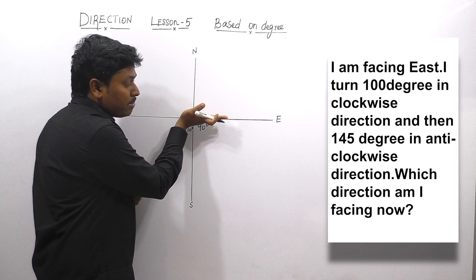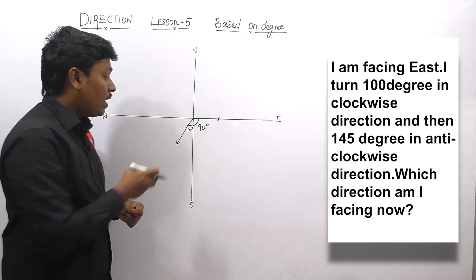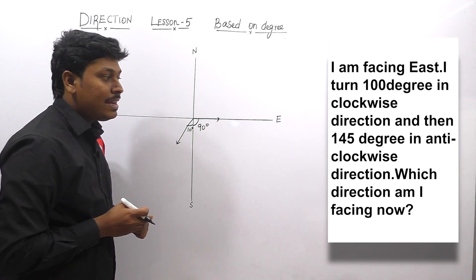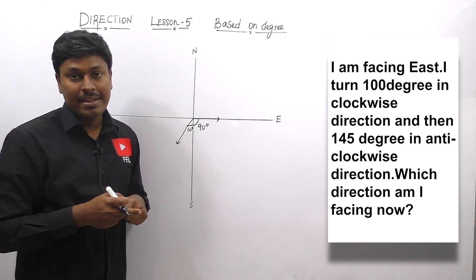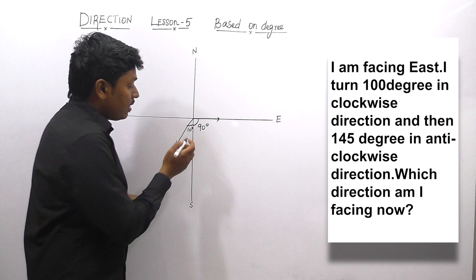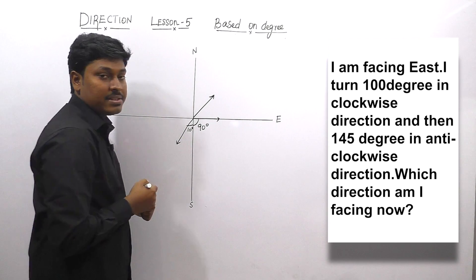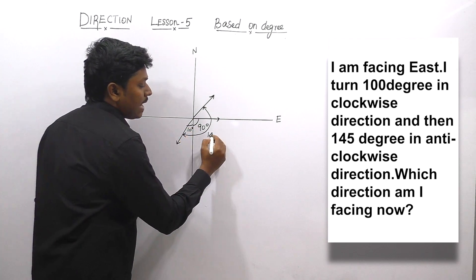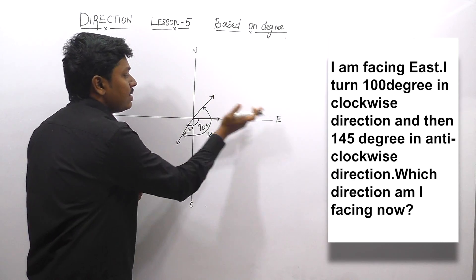Got the logic — first of all, a person is facing east and turns clockwise 100°. We know this is 90° and 10°, so the total is 100°. Now the person is facing southwest. Next point: and then 145° in anti-clockwise direction. From here, the person is turning 145° anti-clockwise. We already know this complete angle is 100°, so 100 plus 45 equals 145°. Finally, the person will be in this direction. This complete angle is 100° and this small angle is 45°, so the total angle is 145°. The question is which direction I am facing now — the answer is northeast.